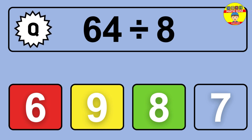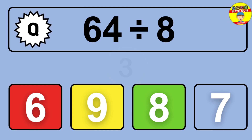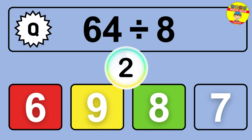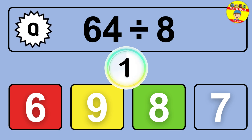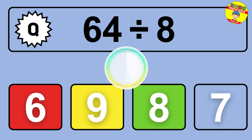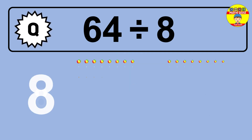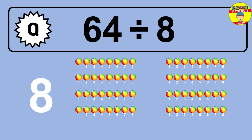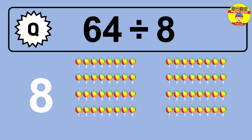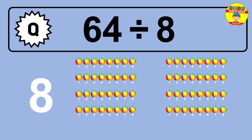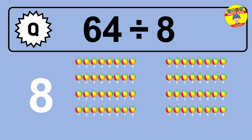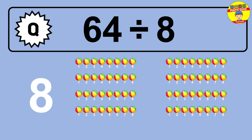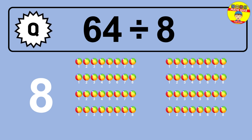64 divided by 8 is... time to think. Let's go to the solution. Divide the number 64 by 8. Each group contains 8 units, so dividing 64 by 8 results in 8 equal groups. Thus, the result is 64 divided by 8 equals 8.